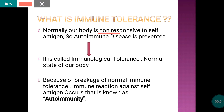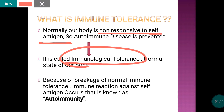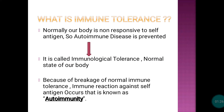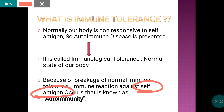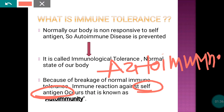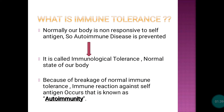Self-antigens are not recognized as foreign, so autoimmune disease is prevented. That non-responsive state to self-antigens is known as immunological tolerance. If your immunological tolerance fails, then you can develop an immune reaction against your self-antigens — producing antibodies against them — and that is known as autoimmune disease.